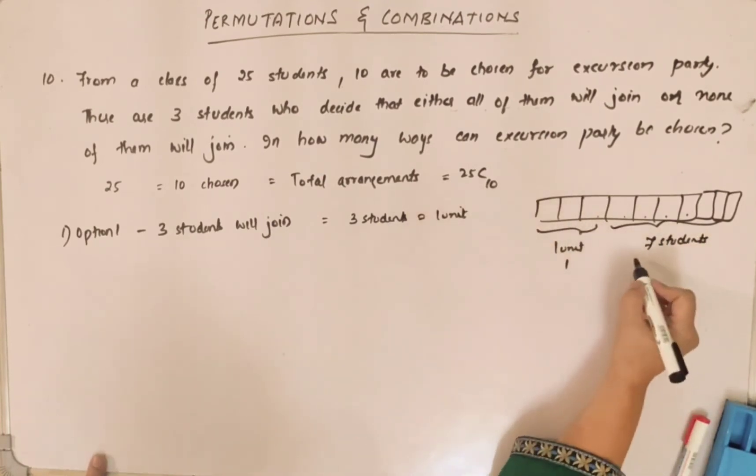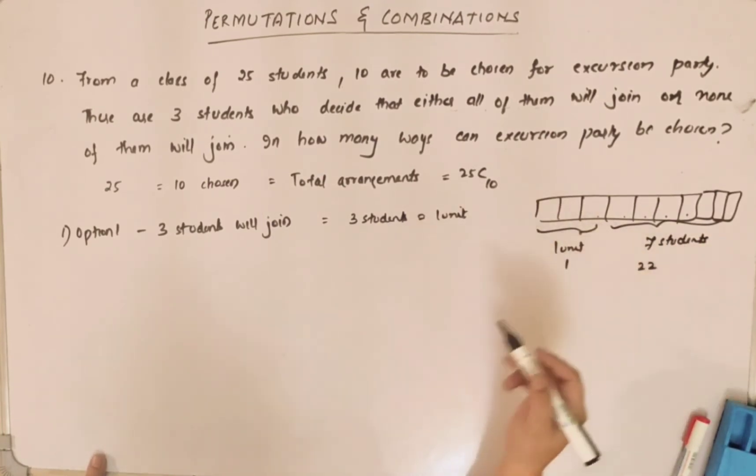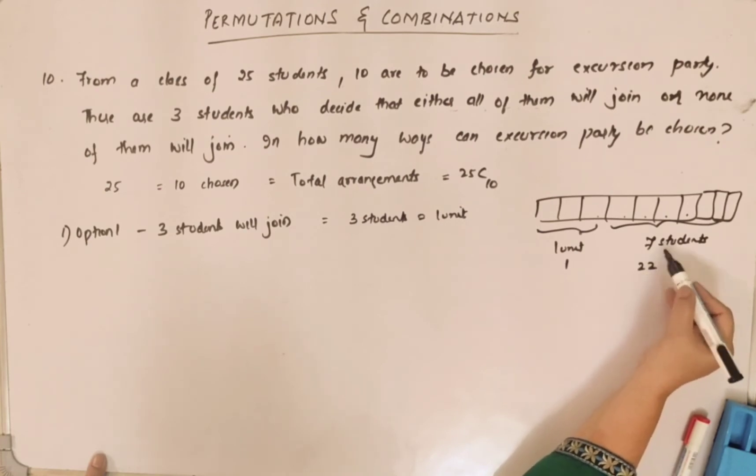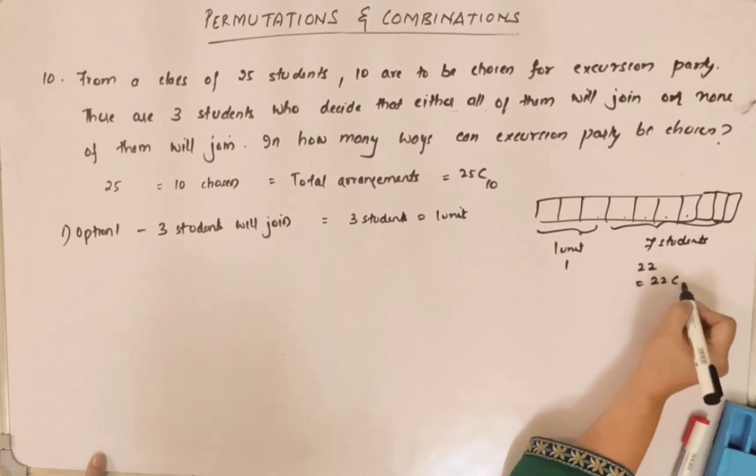The remaining are 7 students selected from 22, because from 25 students, three are already chosen. So you are left with 22 students, and out of 22 students you have to choose 7. So what is it? 22C7.